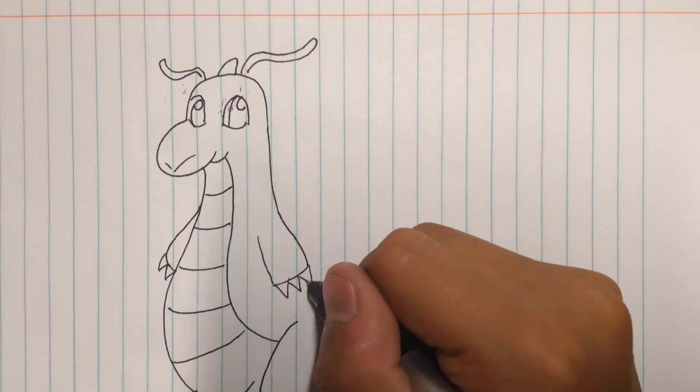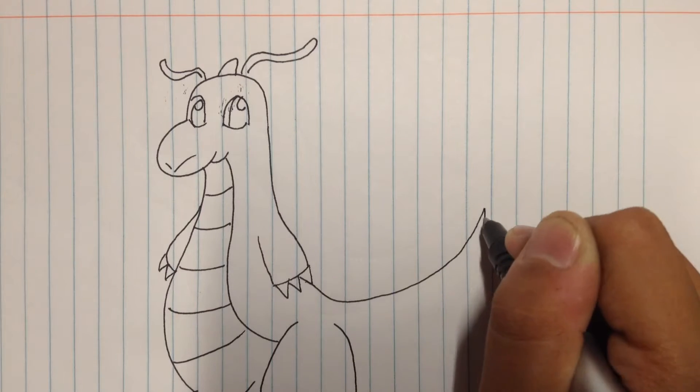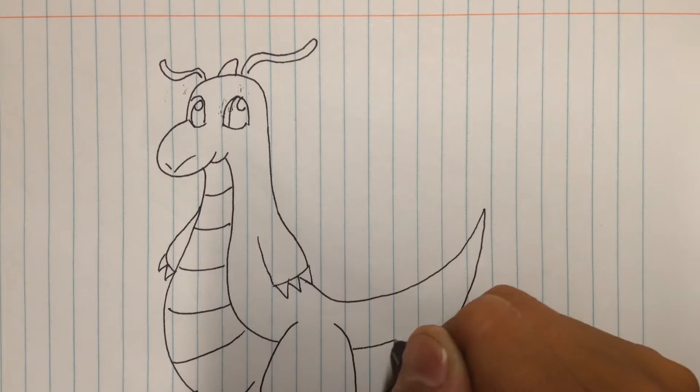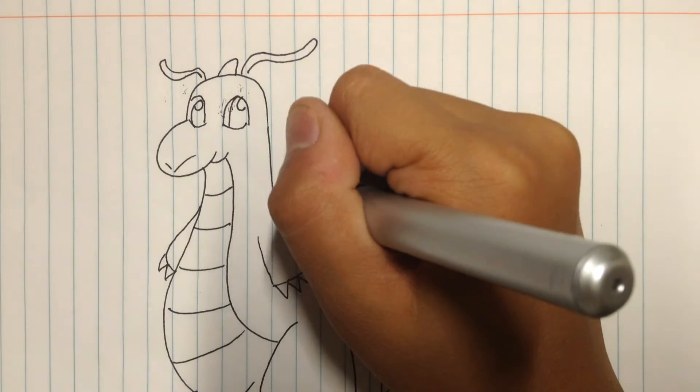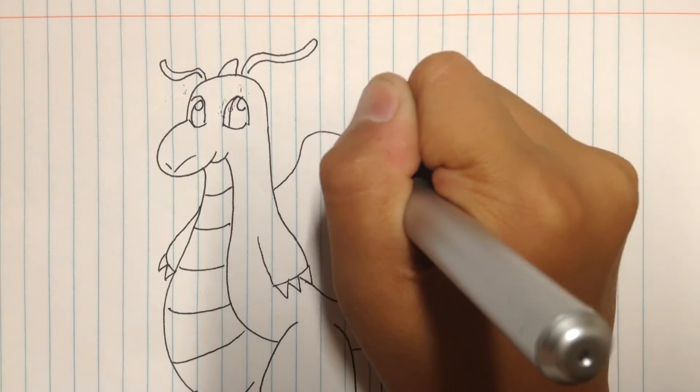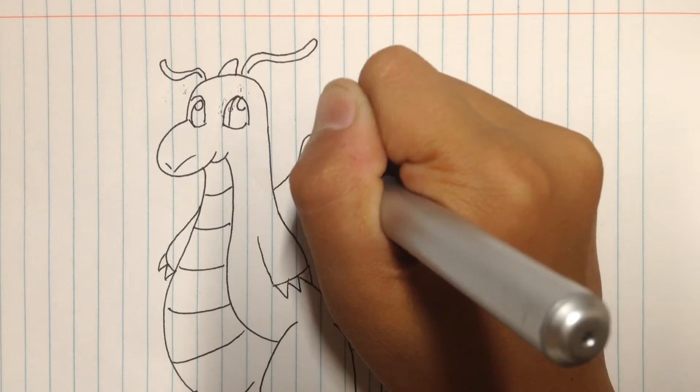Dragonite is almost done. Now I go like that, and I go like that. Make the tail. And now I go like that, and make the one.